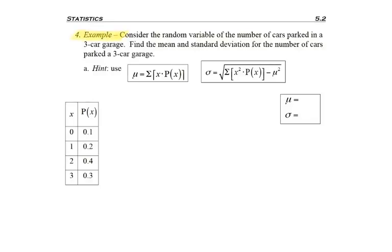So here we're doing an example and we're given the problem that the random variable is the number of cars parked in a three-car garage. So I'm going to stop there. Number of cars, that's discrete. You can only have one or two cars. There's nothing in between that.